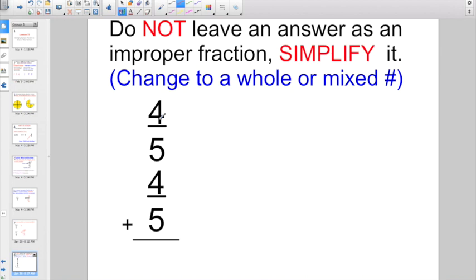So if I went and added 4 fifths plus 4 fifths, yeah, my answer is 8 fifths. But from here on out, we are not going to leave answers as improper fractions. Go ahead and simplify it out. So 5 divides into 8 one whole time, multiplies back for 5. It's going to subtract for 3. My remainder is my numerator. My divisor, what I'm dividing by, is my denominator. So I have 1 and 3 fifths.